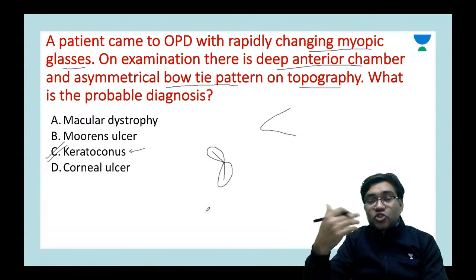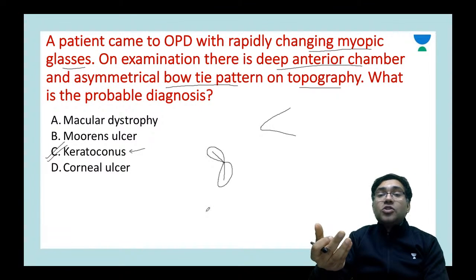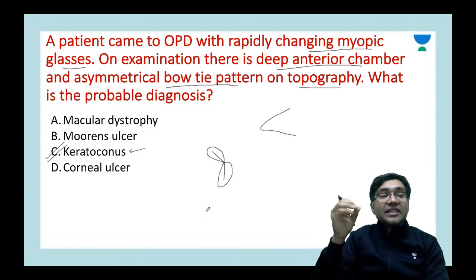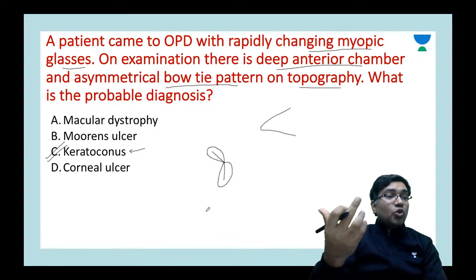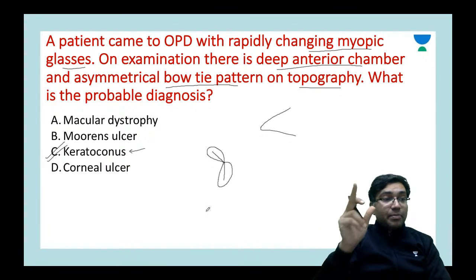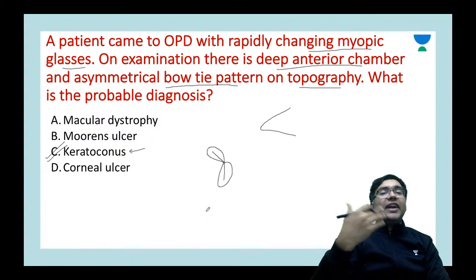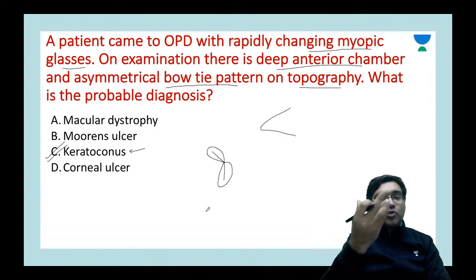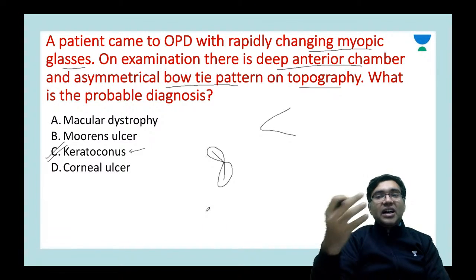Do not be confused by the option of rapidly changing myopic glasses alone. In keratoconus, both myopia and astigmatism increase. If the patient were 55–60 years old, you might consider cataract — but remember, in cataract the myopic change is always gradual, not rapid. Age-related cataract is always a gradual pattern and not an acute pattern.